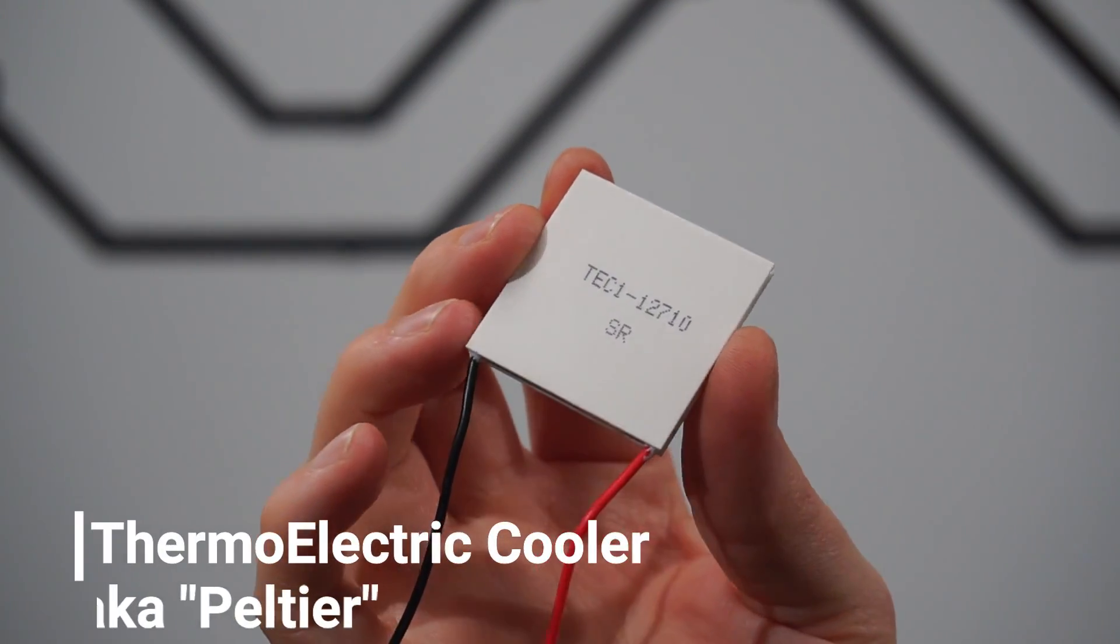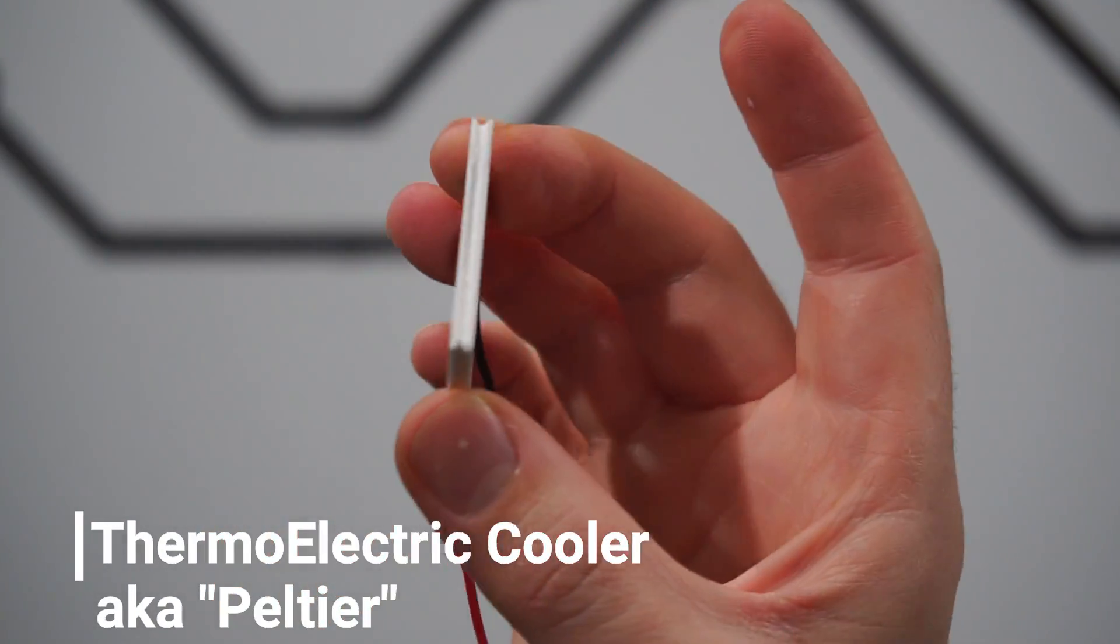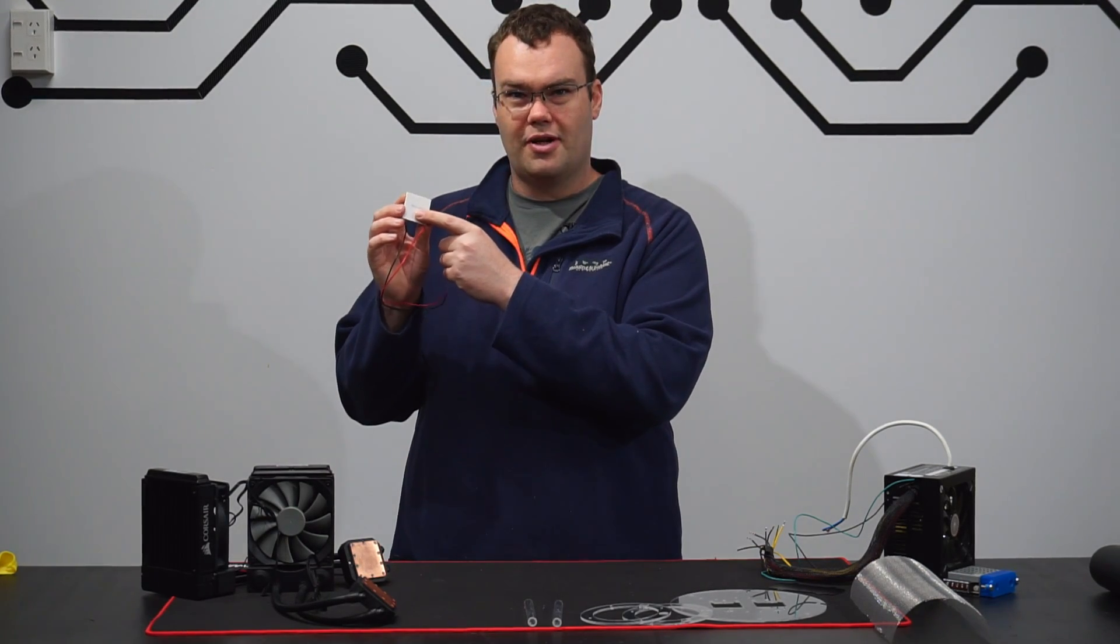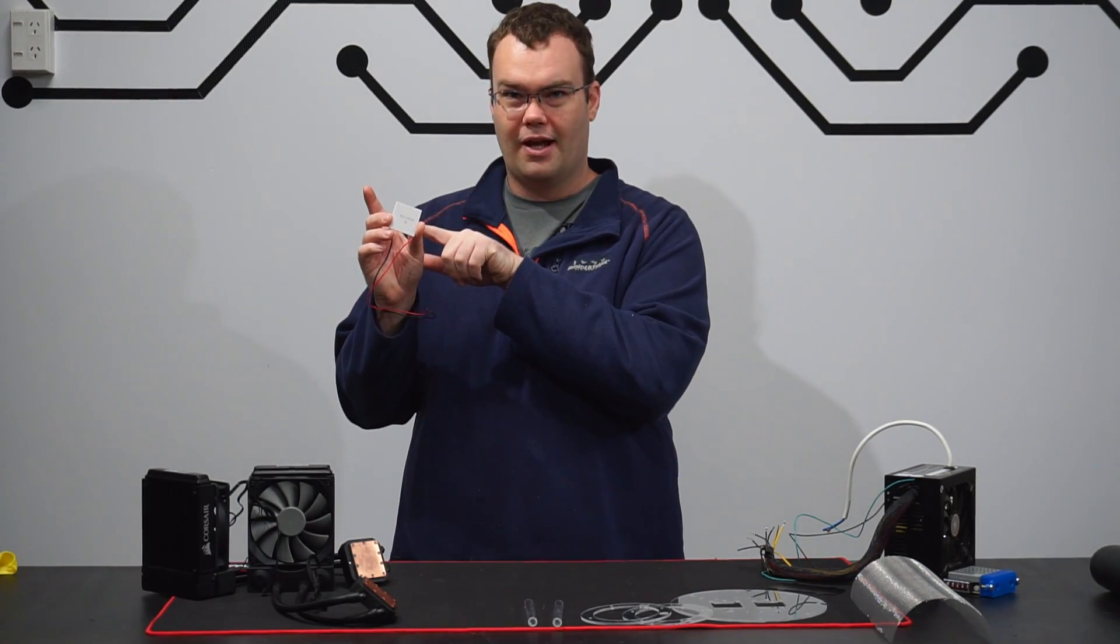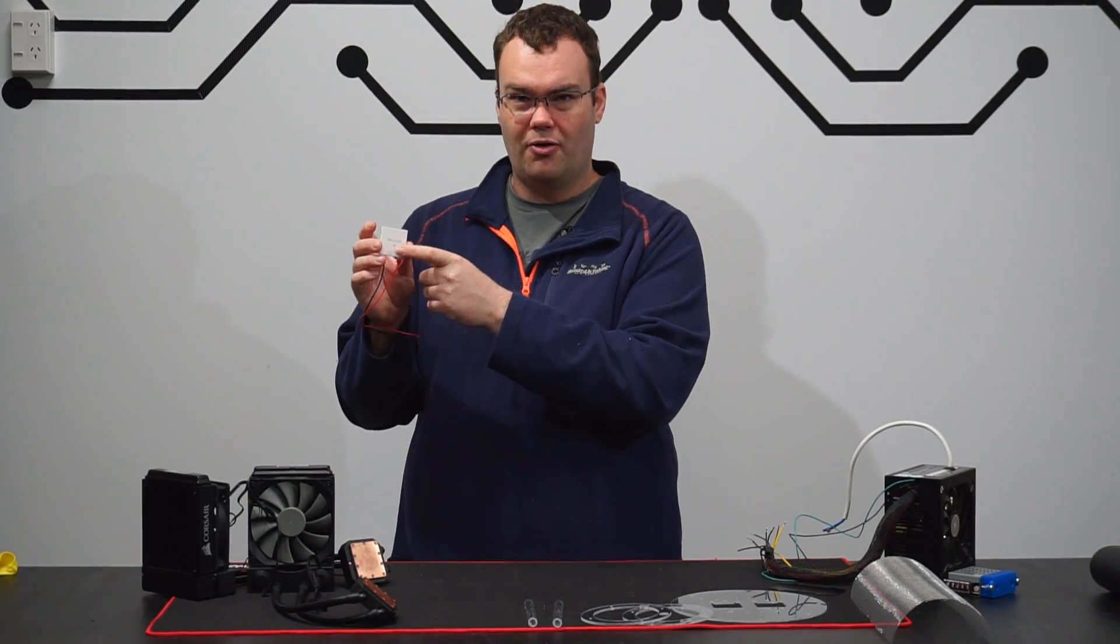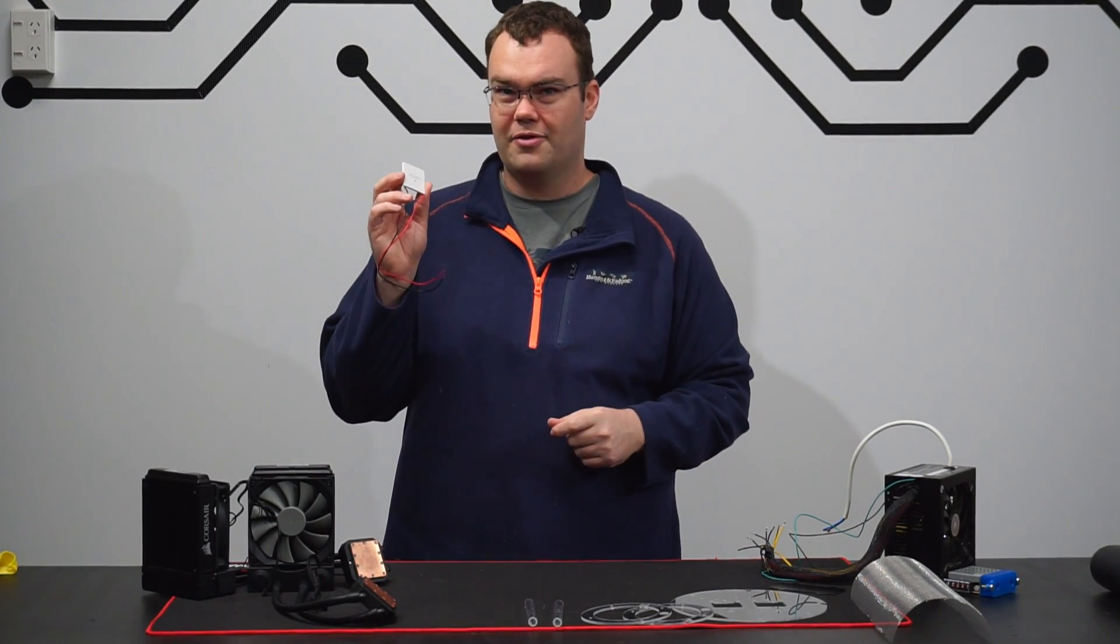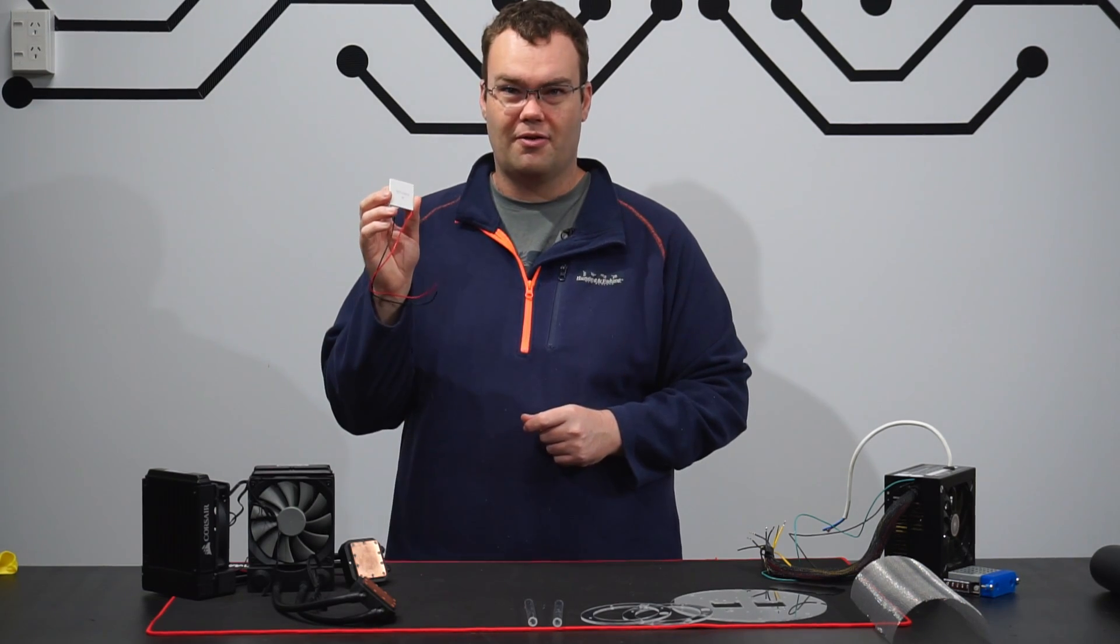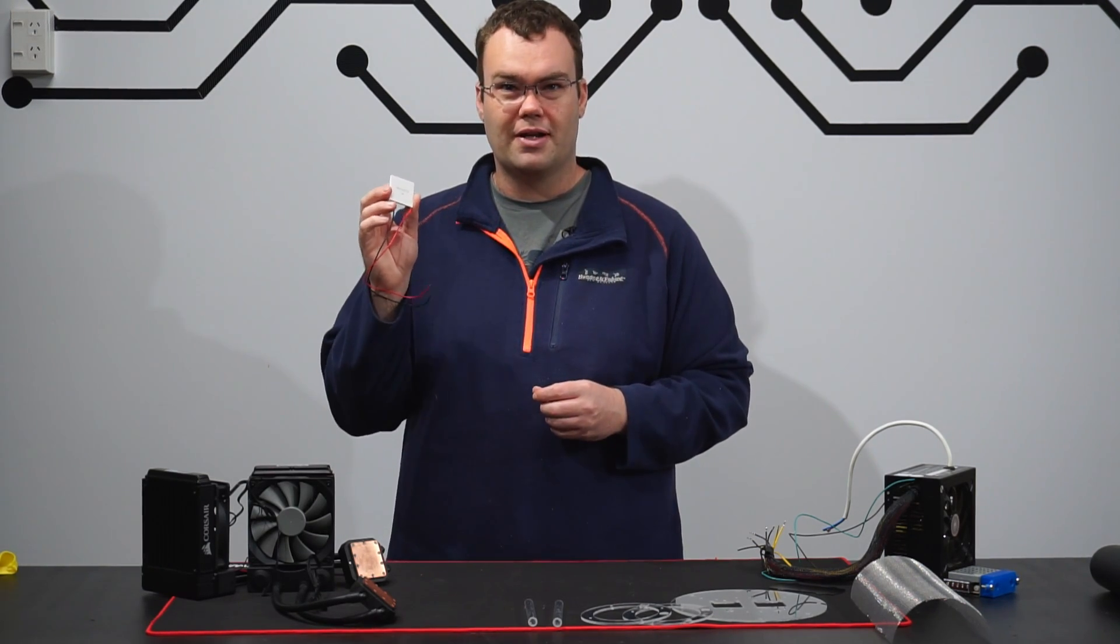This is a Peltier or sometimes called a TEC. Now when we supply power to the Peltier heat gets transferred from one side of the tile to the other and what this effectively means is one side gets very cold and one gets very hot. And if we stack three Peltiers on top of one another we can get down to really cold temperatures cold enough to make a cloud chamber.